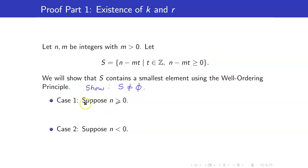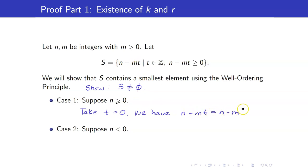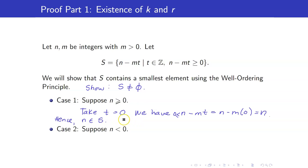We proceed by cases. For Case 1, suppose n is greater than or equal to 0. If we take t equal to 0, then n minus mt equals n minus m times 0, which equals n. Since n is greater than or equal to 0, n is an element of S. Hence n is in S, and therefore S is non-empty in the case when n is greater than or equal to 0.